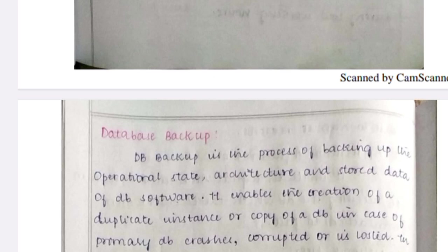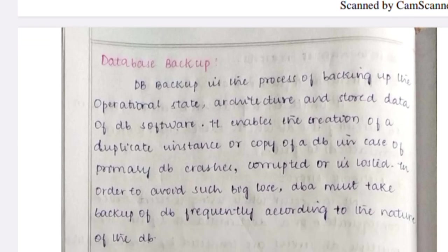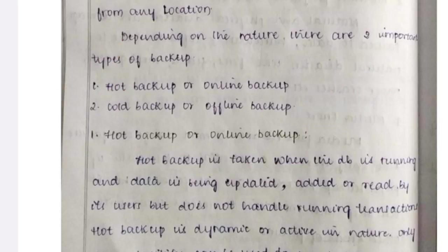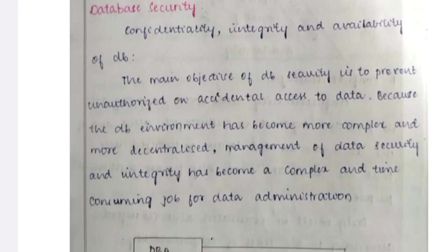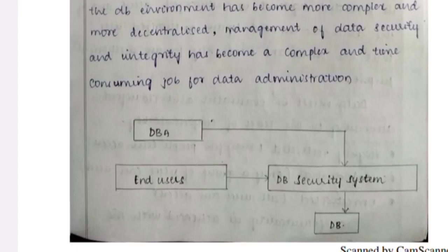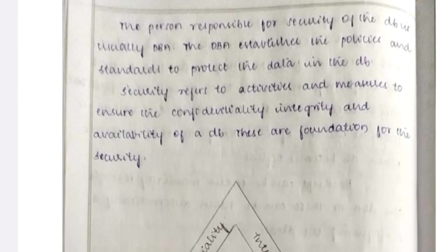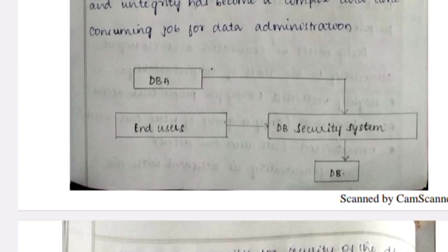The last concept is database backup. The best way to store and backup is online, where data can be accessed anytime and anywhere. There are two types of backup techniques: online backup and offline backup, also known as hot backup and cold backup. Online (hot) backup means backup is available while the system is running; offline (cold) backup means backup when the system is not in use.